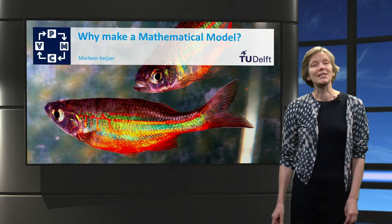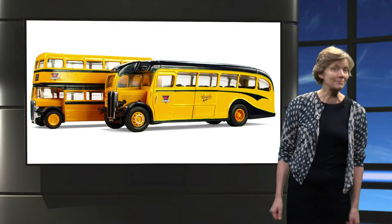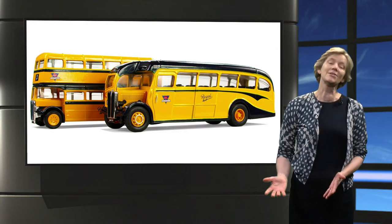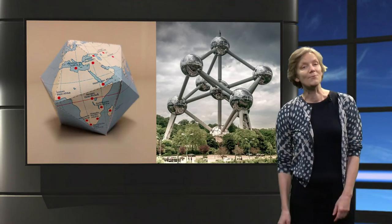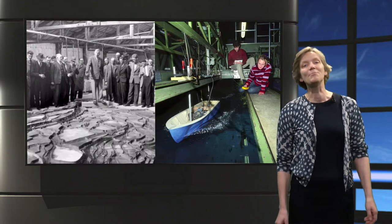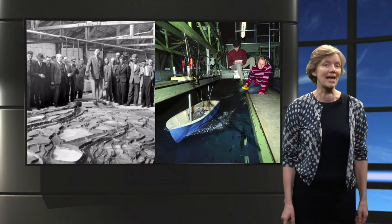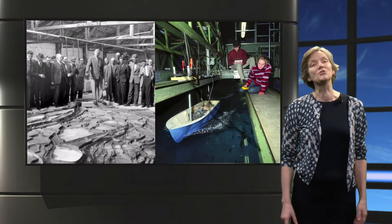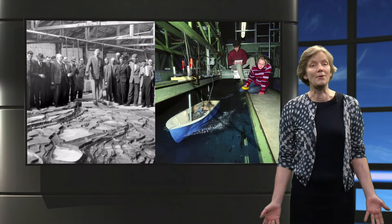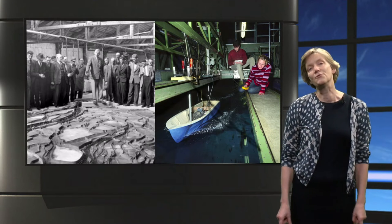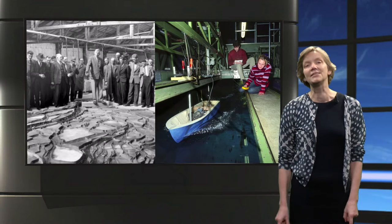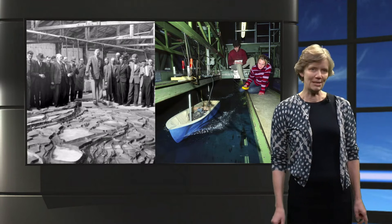The word model has many meanings. A model may be a person, a model may be an object — an object to play with, or to display, or to explain with. Another type of model is a scale model. It can be used to simulate phenomena that are difficult to study in real life, such as the formation of a delta, or the waves around a ship.